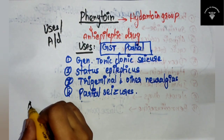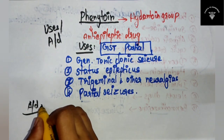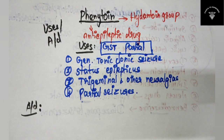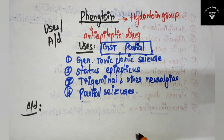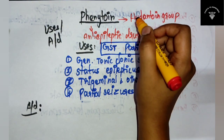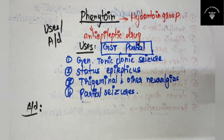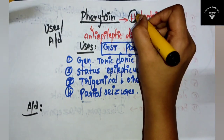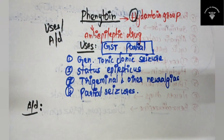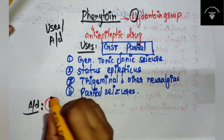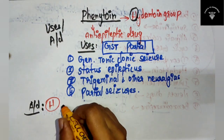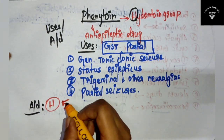Now let's see what are the adverse effects. Adverse effects of phenytoin are very simple - all adverse effects start with the letter H from hydantoin. You just have to remember the 5 H's.